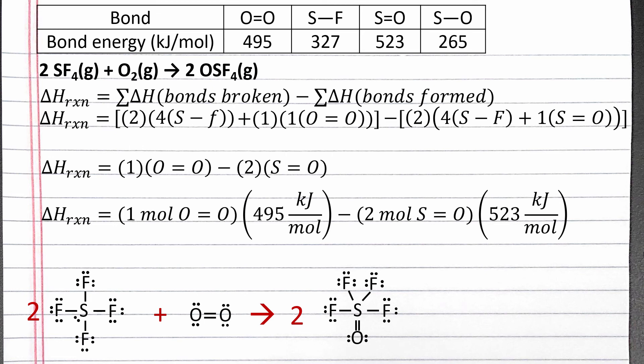We have one mole of oxygen-oxygen double bonds, and the bond energy is 495 kJ per mole. We have two moles of sulfur-oxygen double bonds, and the bond energy is 523 kJ per mole. Completing the calculation, we should get negative 551 kJ for the change in enthalpy of the reaction.